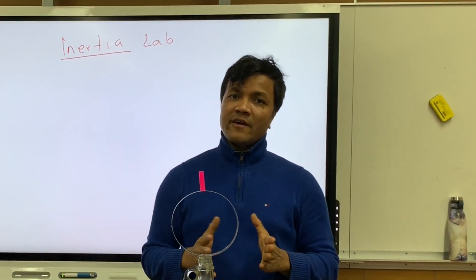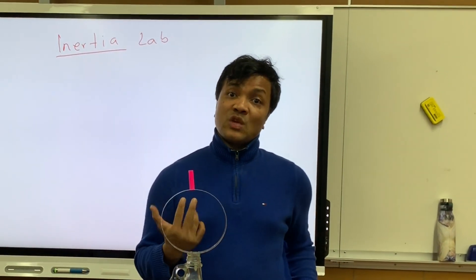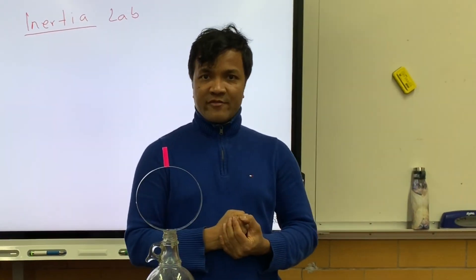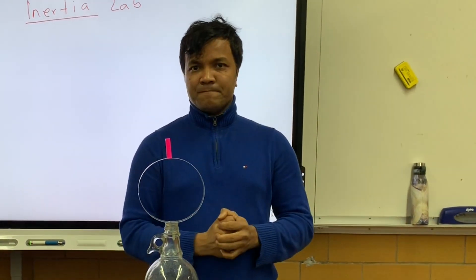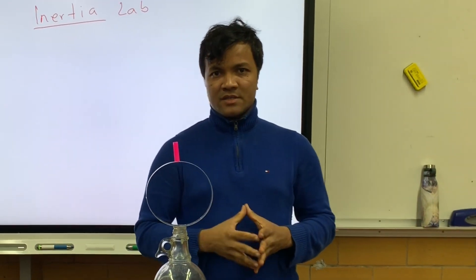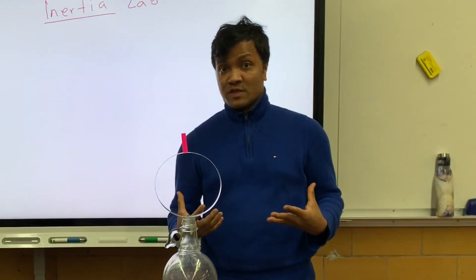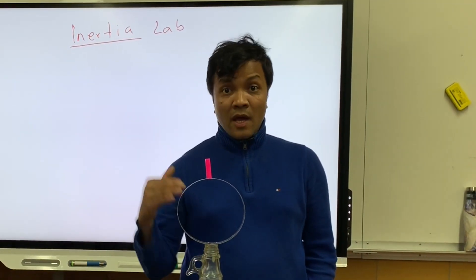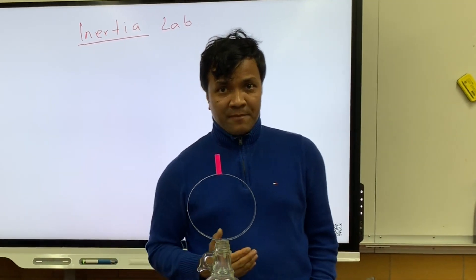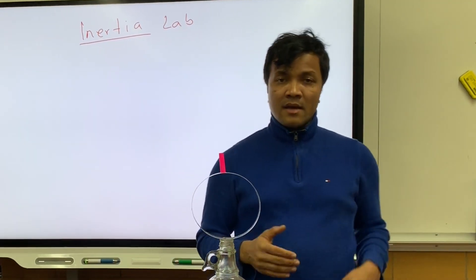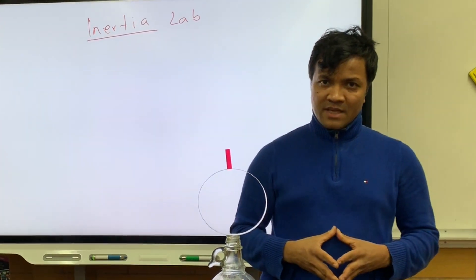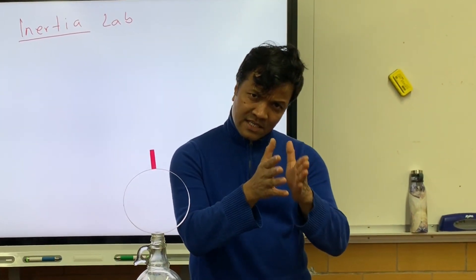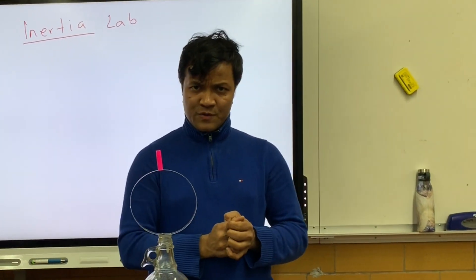Newton's First Law is amazing. Newton's First Law has three parts. Part one: objects at rest like to stay at rest — we call it inertia. The second part: objects in motion like to stay in motion. We often call it momentum, because p is equal to mv. The third part of Newton's First Law is: unless acted upon by an unbalanced force.